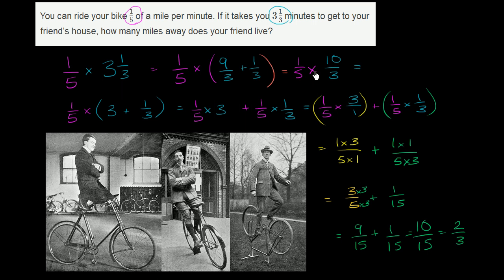And now we can just multiply the numerator and multiply the denominator, or multiply the numerators. So this is 1 times 10, 1 times 10, I'm trying to stay good with the color coding, over 5 times 3, over 5 times 3,